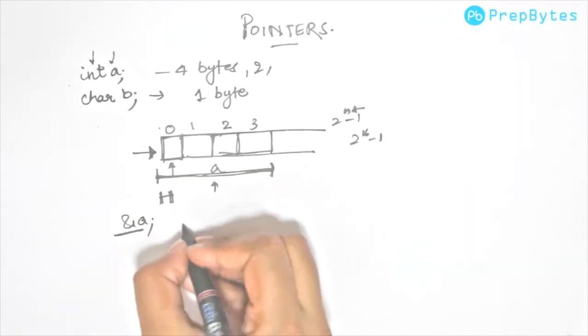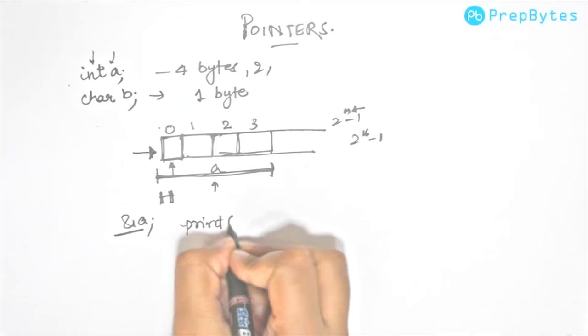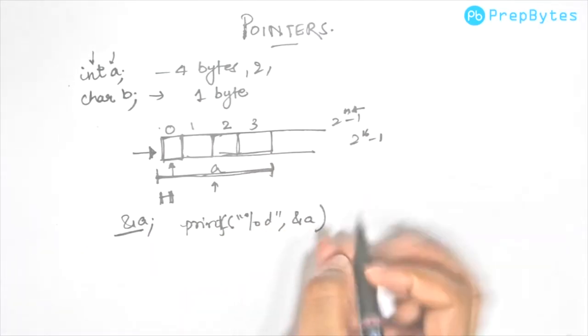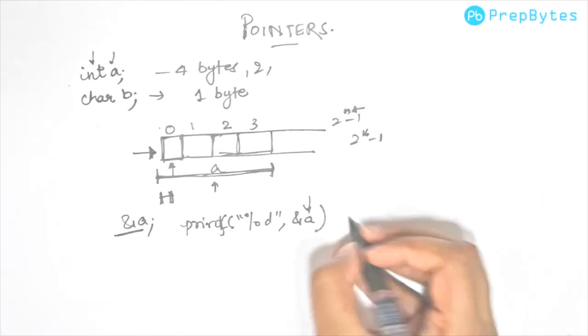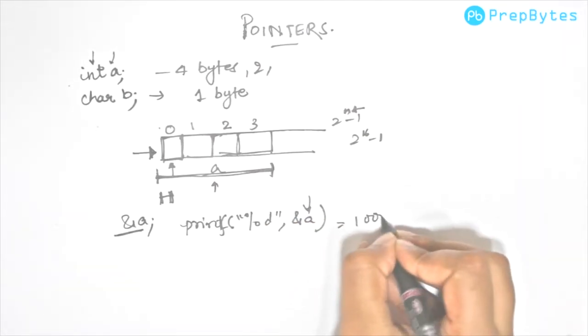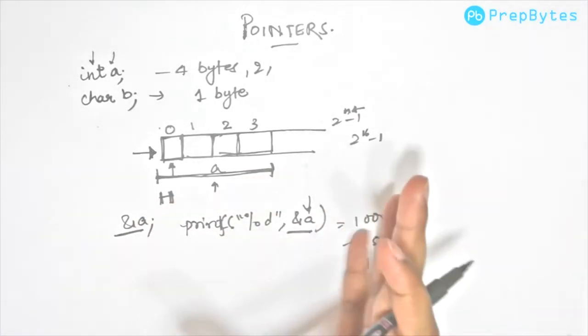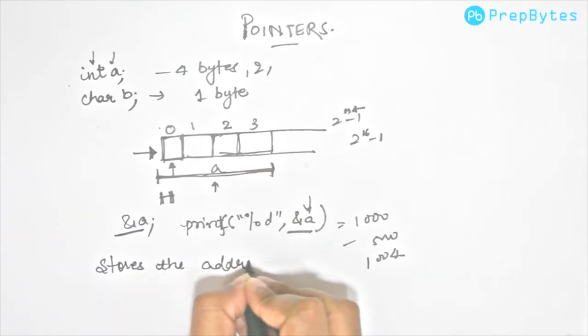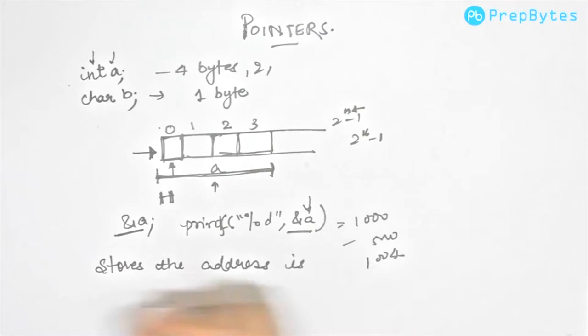If you try to print this, it gives you the address of a. It could be anything, it could be 1000 or 5000 or 1004, anything. Now this is how we can print the address of a. Now let's suppose I want to store this address in some variable. The variable that stores the address is called pointer.